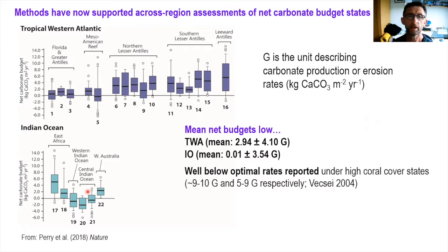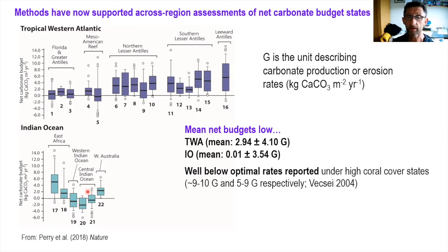The bottom line is that net budget states are pretty low across all of these regions, and they are significantly below those associated with high coral cover states reported in earlier review papers on this topic. Many reefs are either not producing very much net new carbonate, and in some cases actually shifting to net negative budgets — starting to erode.